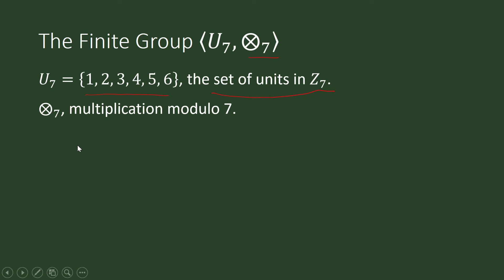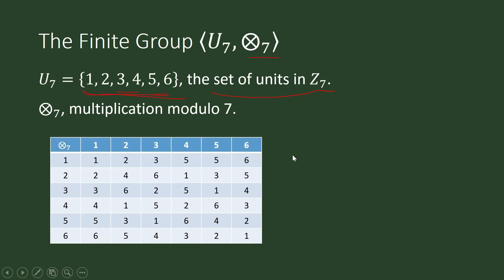Here is the multiplication modulo 7 table. To read it: 4 times 3 modulo 7 is 5, because 4×3 = 12 under ordinary multiplication, and when you divide 12 by 7 the remainder is 5. Similarly, 6×5 modulo 7 is 2.